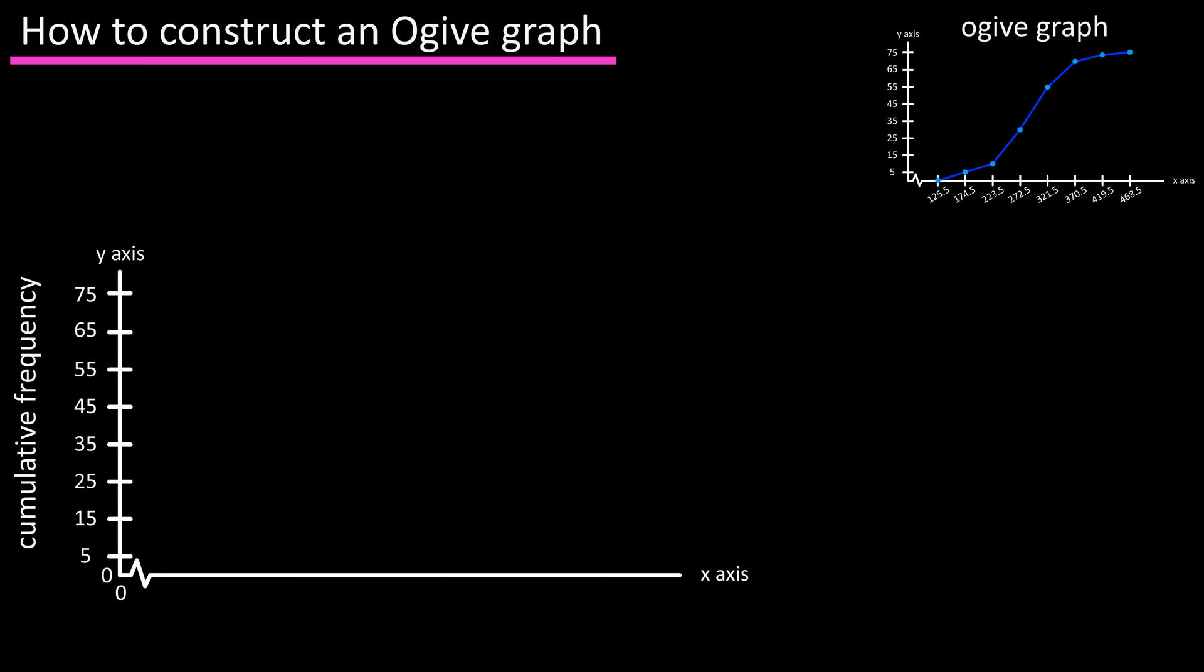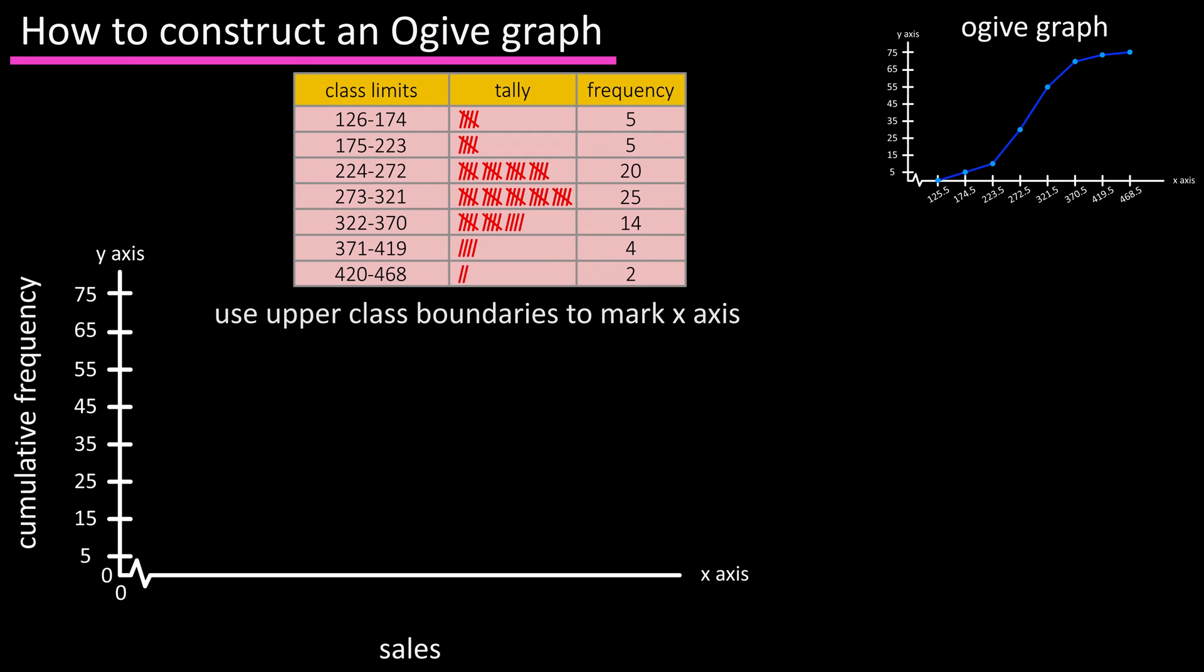The x or horizontal axis is going to represent whatever the data is. So let's say this data represents sales. For the x-axis we're going to use upper class boundaries to mark it, so we need to calculate them.